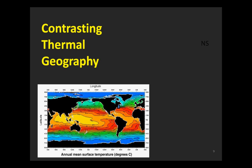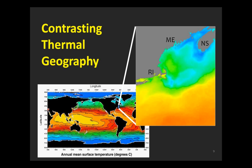One thing that's really important to recognize about our part of the world is the contrasting thermal geography. At our doorstep is really the steepest latitudinal gradient in sea temperature on the planet. When you travel from southern New England—say Rhode Island to eastern Maine—during the summer, you're traversing a gradient in sea surface temperature ranging from about 20 to 25 degrees in the coastal waters, to thermal maxima of only 12 to 13 degrees in the eastern Maine coastal current.